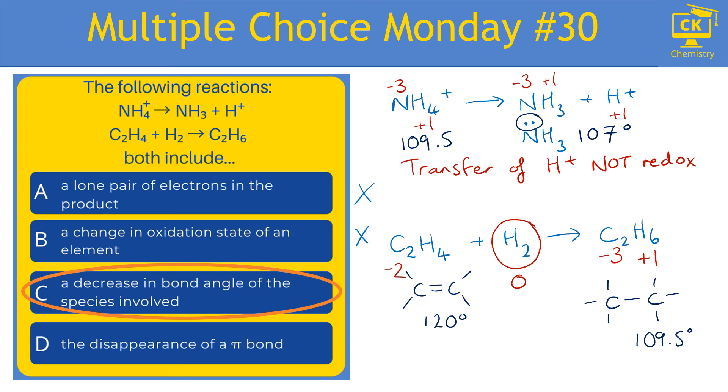When we look at D, the reason D is incorrect is because, of course, there are no pi bonds in ammonia or ammonium. There are only pi bonds where you see double bonds and there's only double bonds in the second reaction. So the second reaction does have disappearance of a pi bond, but the first reaction does not.